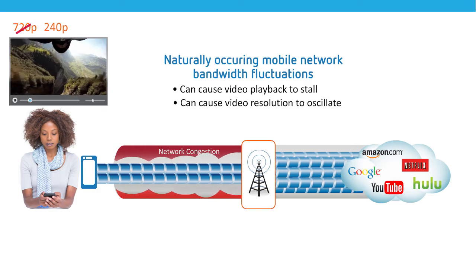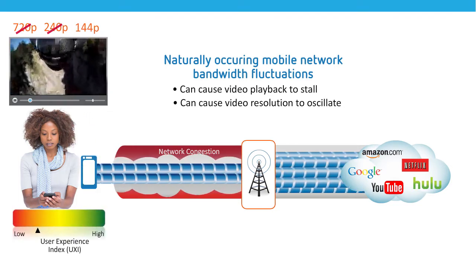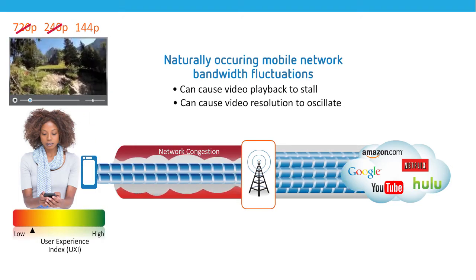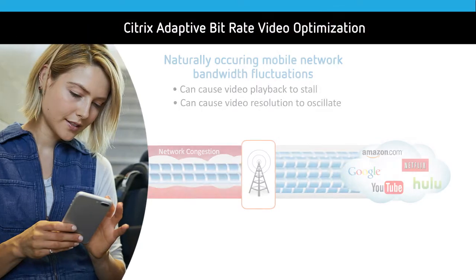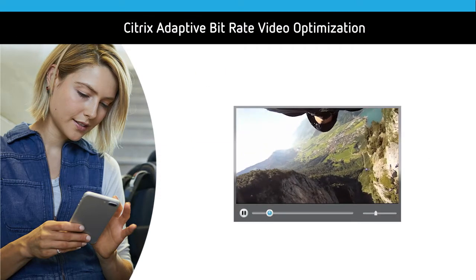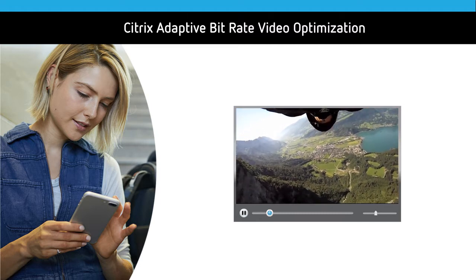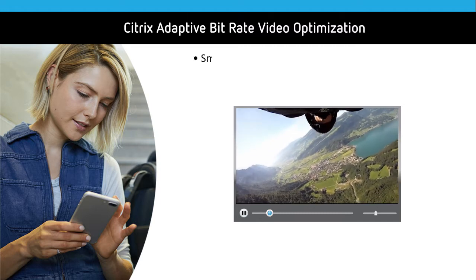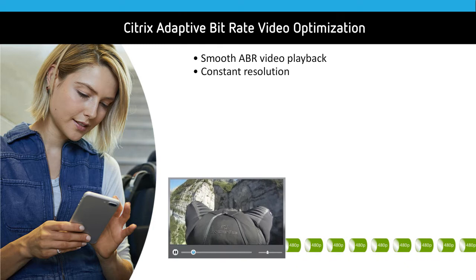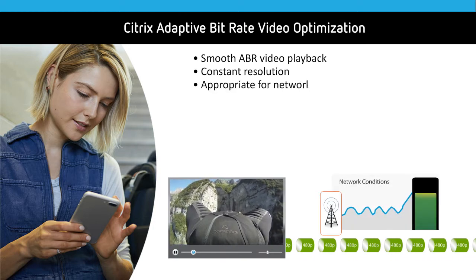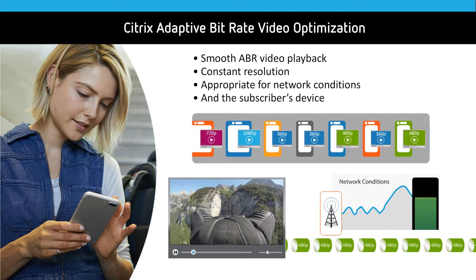Both of these problems create a disappointing mobile video experience for the subscriber. Citrix Adaptive Bitrate Video Optimization addresses the problems associated with the use of ABR in a mobile environment to yield smooth video playback at a constant resolution that is appropriate for the prevailing network conditions and for the subscriber device.